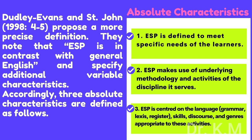Dudley Evans and St. John (1998, pp. 4-5) propose a more precise definition. They note that ESP is in contrast with general English and specify additional variable characteristics. Accordingly, three absolute characteristics are defined as follows: 1. ESP is defined to meet specific needs of the learners. 2. ESP makes use of underlying methodology and activities of the discipline it serves. 3. ESP is centered on the language — grammar, lexis, register, skills, discourse, and genres — appropriate to these activities.